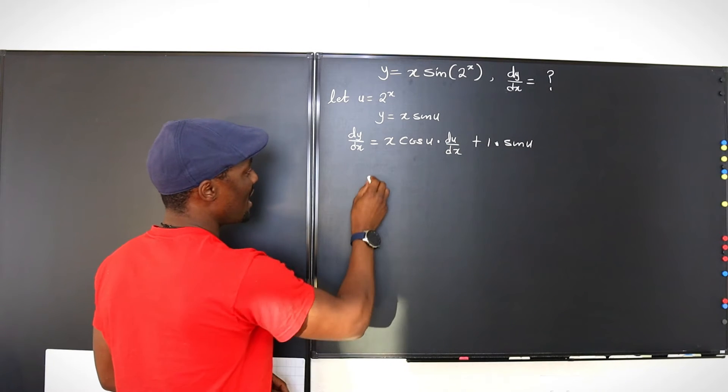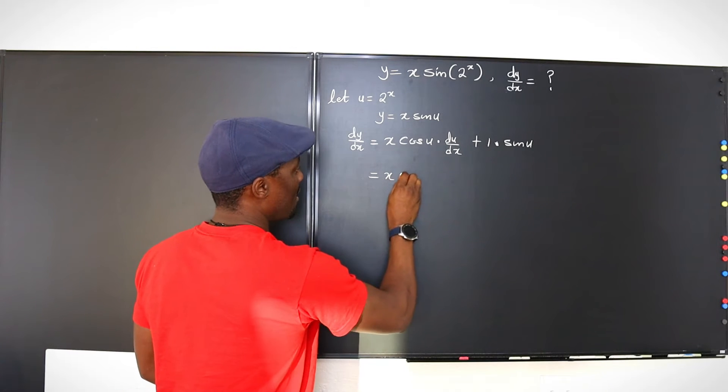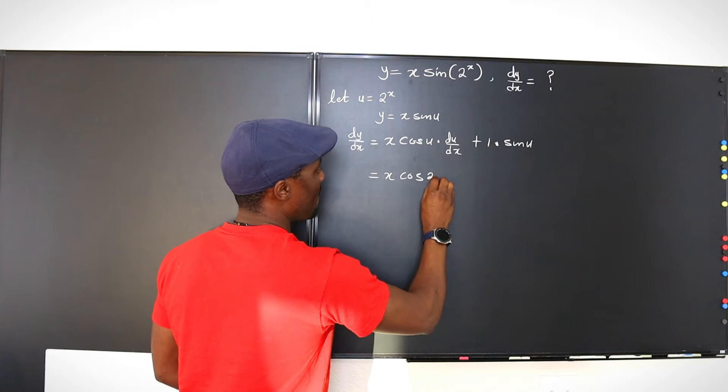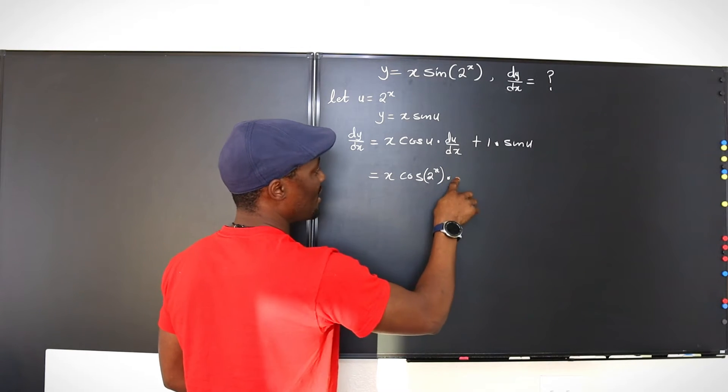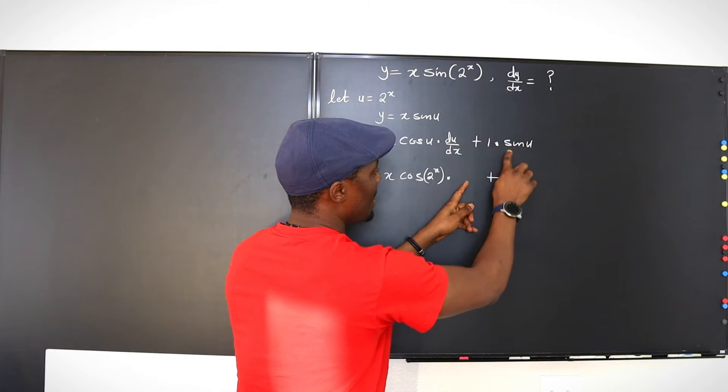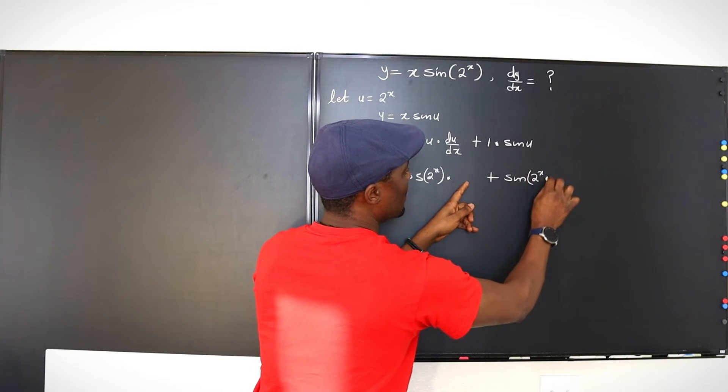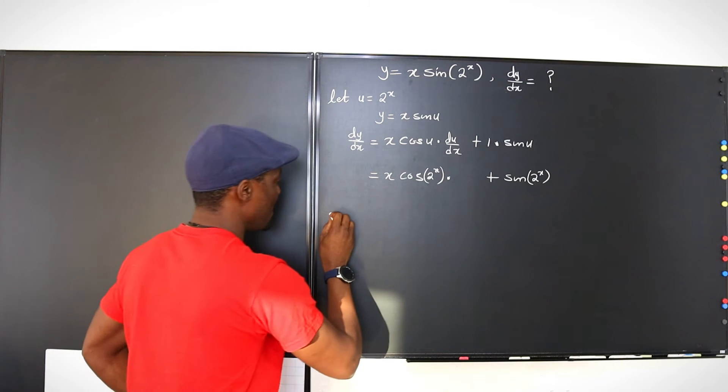Okay, so we can say that this is equal to x cosine u. Remember our u is 2 to the x. Let me put it in parenthesis. Okay, multiplied by something we don't know yet. I'm going to leave that space plus sine u. Once we get this du dx, we'll be fine. So let's find du dx.